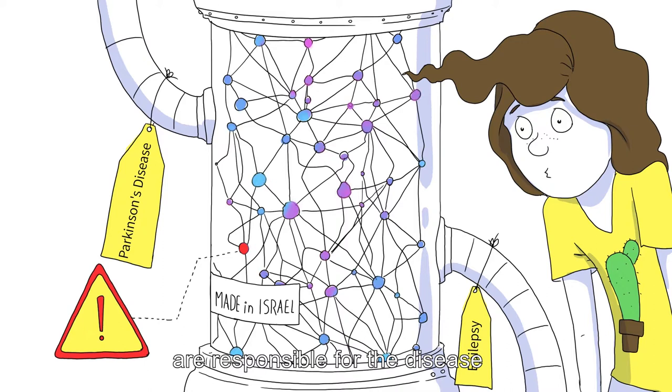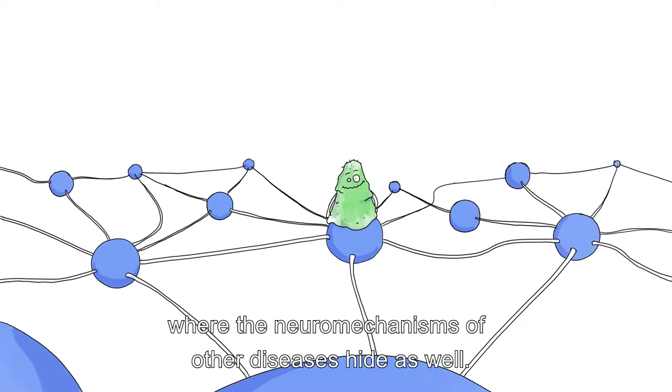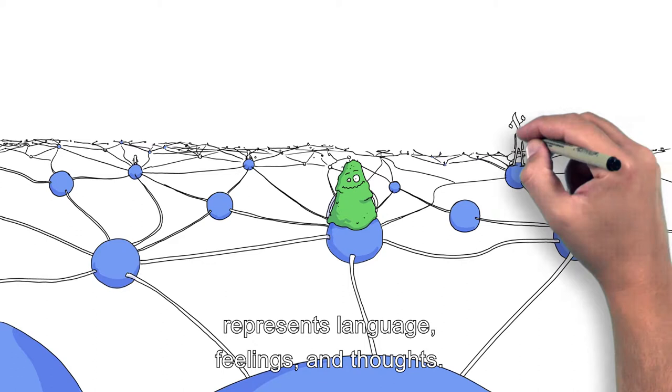And hopefully, we will know how to cure it. This method enables us to find where the neural mechanisms of other diseases hide as well. It also allows us to understand which neural activity represents language, feelings, and thoughts.